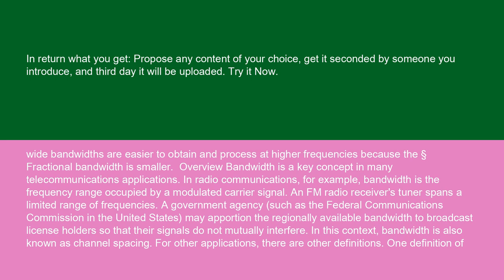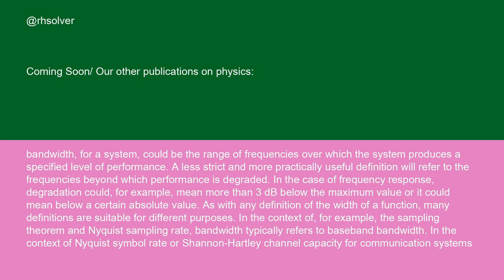For other applications, there are other definitions. One definition of bandwidth for a system could be the range of frequencies over which the system produces a specified level of performance. A less strict and more practically useful definition will refer to the frequencies beyond which performance is degraded. In the case of frequency response, degradation could, for example, mean more than 3 dB below the maximum value, or it could mean below a certain absolute value. As with any definition of the width of a function, many definitions are suitable for different purposes.